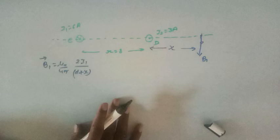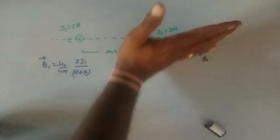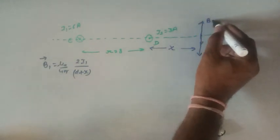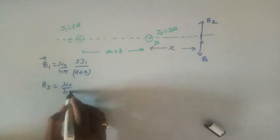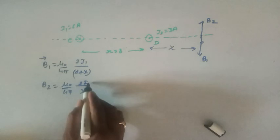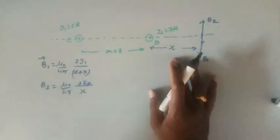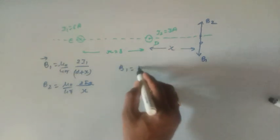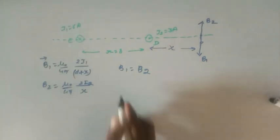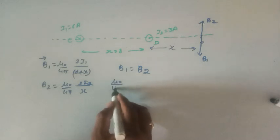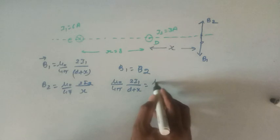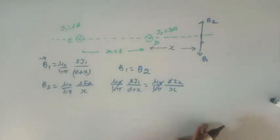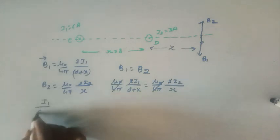For conductor D, current is in the outward direction. Using the right-hand rule, B₂ also acts downward at the external point. B₂ = (μ₀/4π) × (2i₂)/x. For the net magnetic field to be zero, B₁ = B₂, giving: (μ₀/4π)(2i₁)/(d + x) = (μ₀/4π)(2i₂)/x. The (μ₀/4π) and 2 cancel out, leaving i₁/(d + x) = i₂/x.